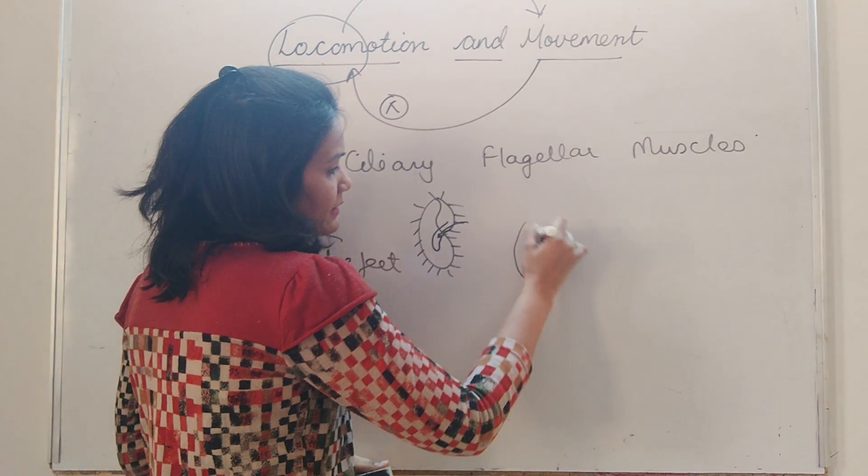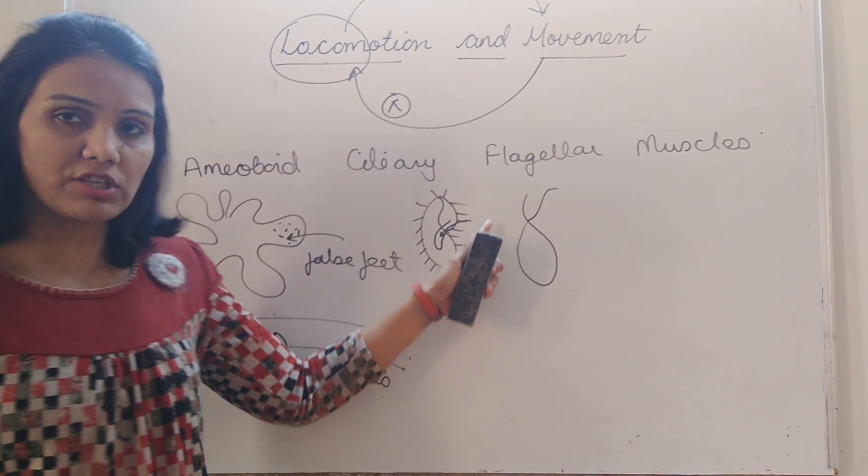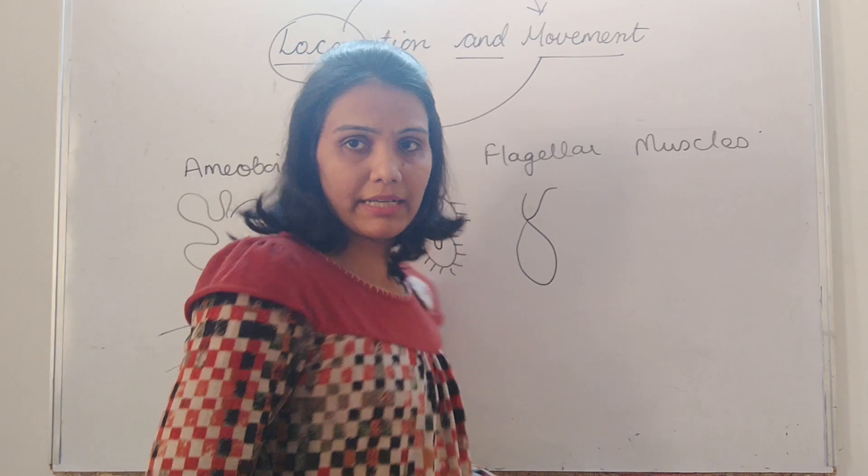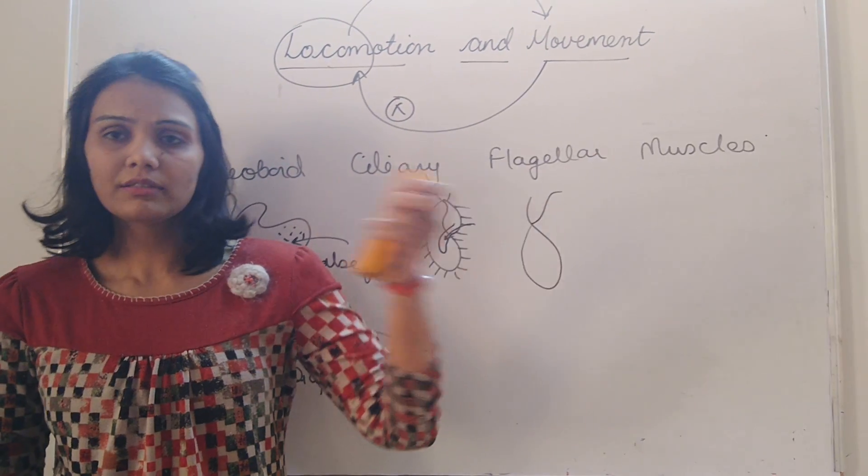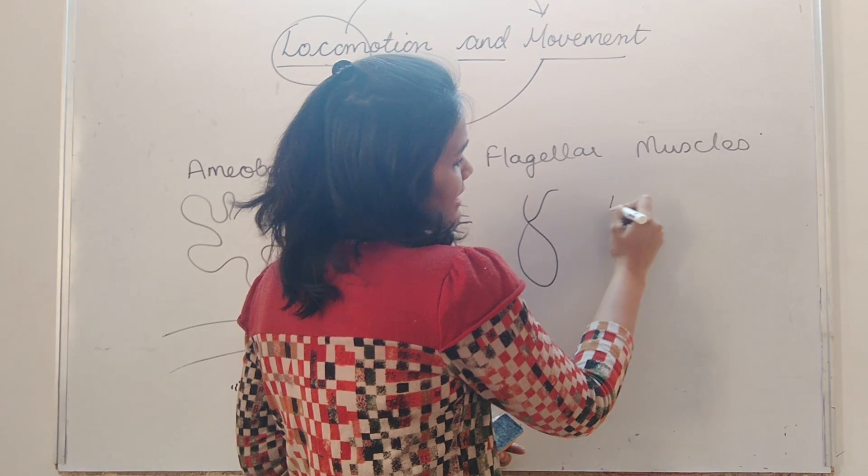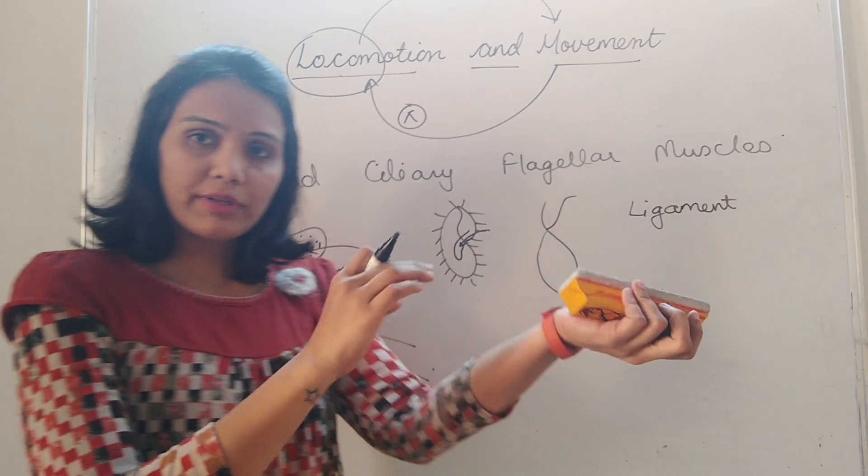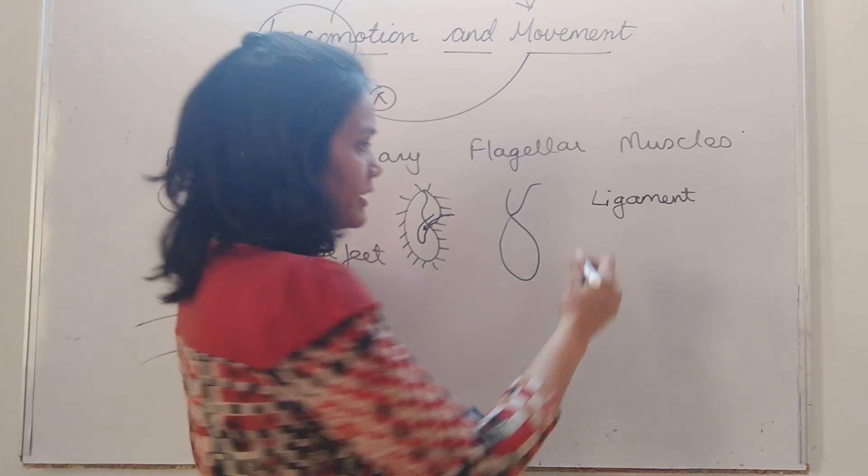Flagellar movement is obtained in the Euglena. It moves with the help of the flagella. Muscular movement in our body. The hand is moving. So this is the muscular movement and bone to bone attachment is called as the ligament. And an attachment of a muscle to a bone is called as tendon.